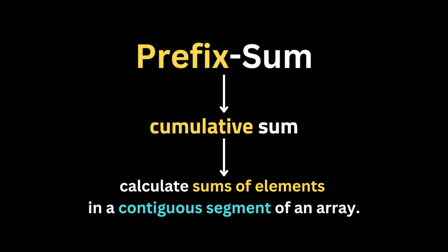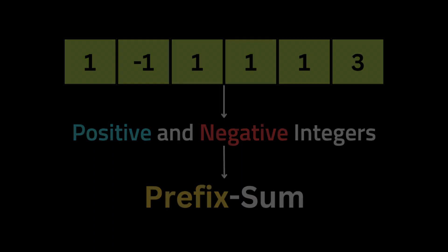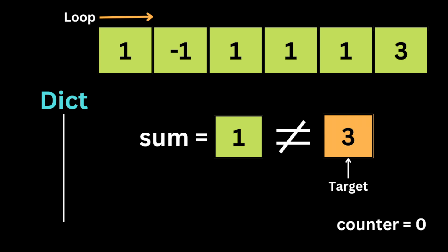The second way to solve this problem is using prefix sum — it's a bit more challenging for beginners. The prefix sum technique, also known as cumulative sum, calculates sums of elements in a contiguous segment of an array. It's the best approach when the input array has both positive and negative integers. We use a variable called sum to track the cumulative sum, a dictionary where keys are cumulative sums and values are how many times that sum has appeared, and a counter for the number of subarrays equal to k.